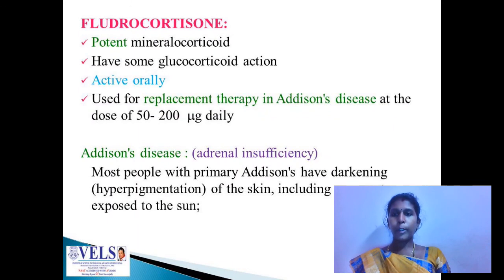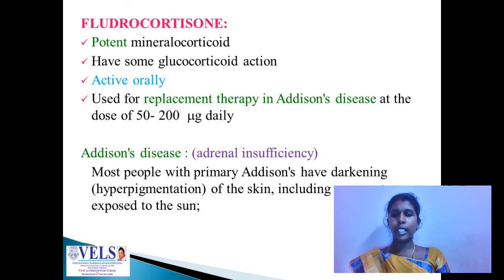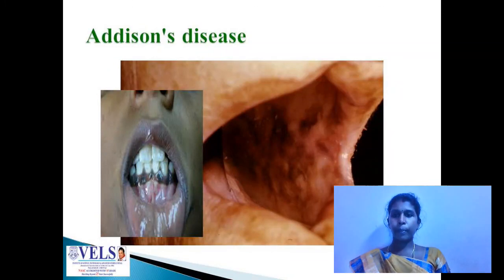Fludrocortisone is a potent mineralocorticoid with some glucocorticoid action. It is active orally and is used for the treatment of Addison's disease. Addison's disease is due to adrenal insufficiency and presents with darkening of the skin and pigmentation of the gums.